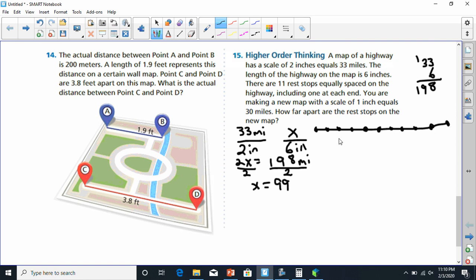There's really 10 segments in between all these stops. 1, 2, 3, 4, 5, 6, 7, 8, 9, and 10. So we have to divide this 99 by 10 to find out how far apart are the rest stops.